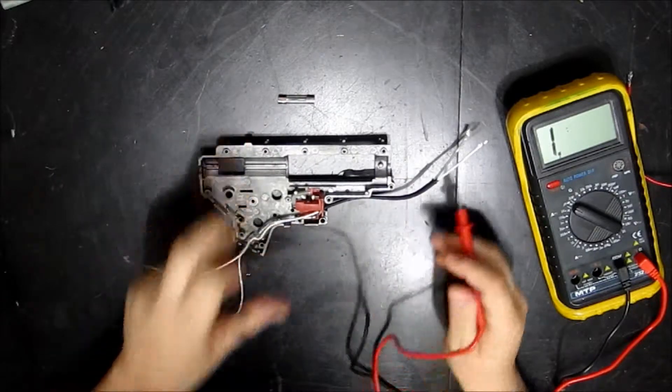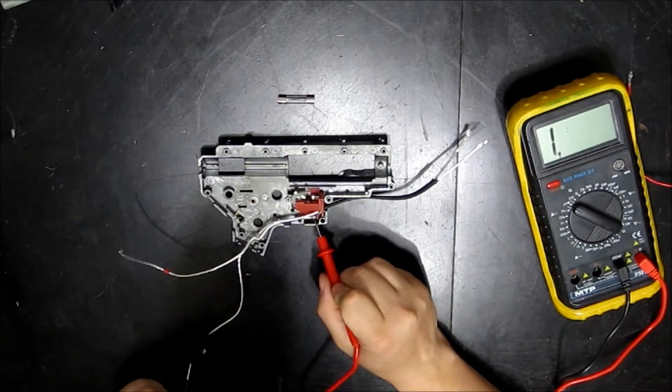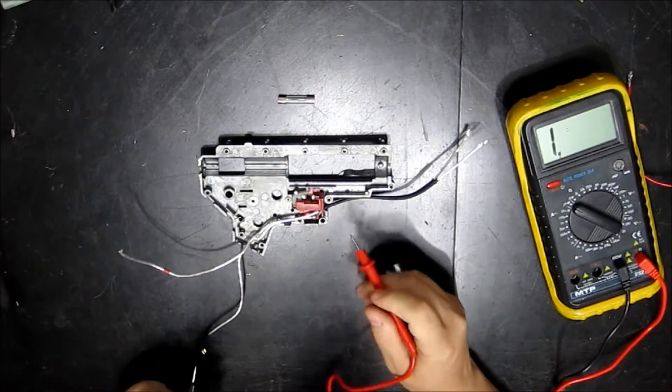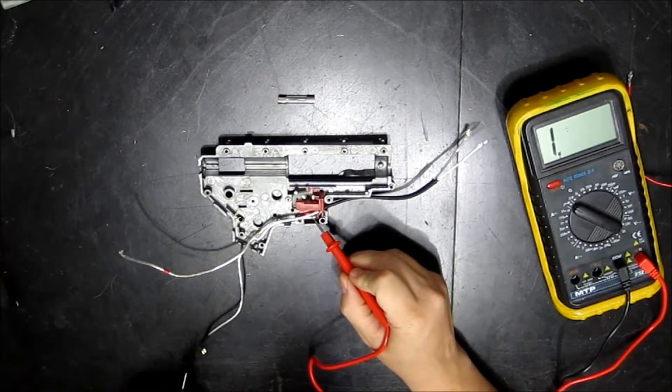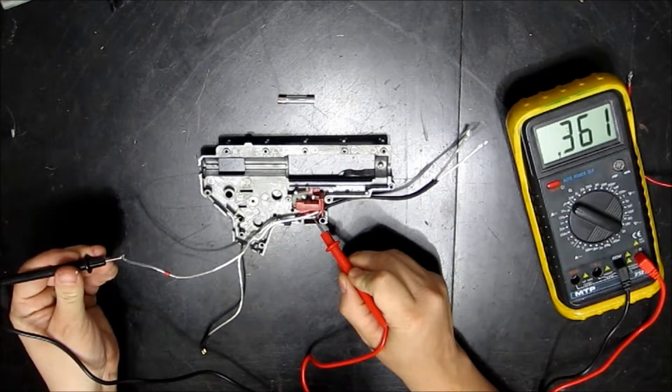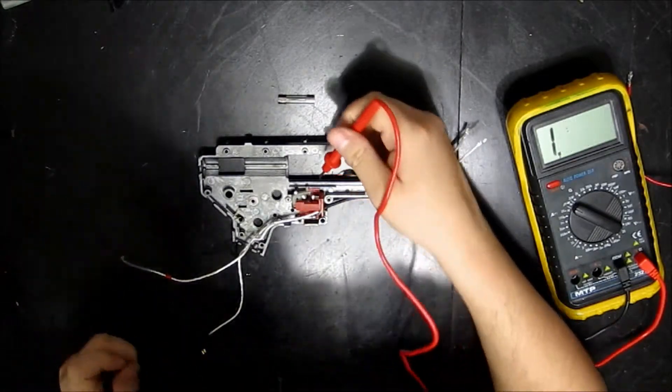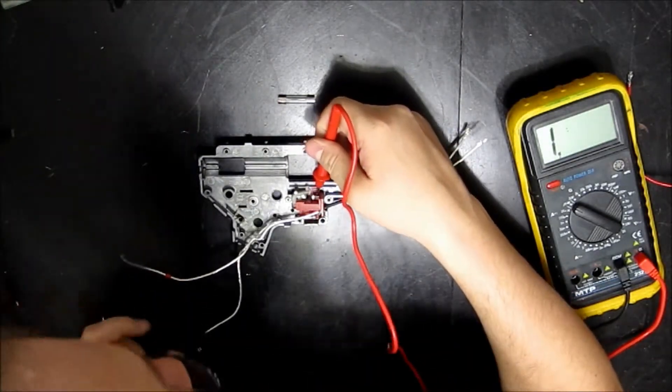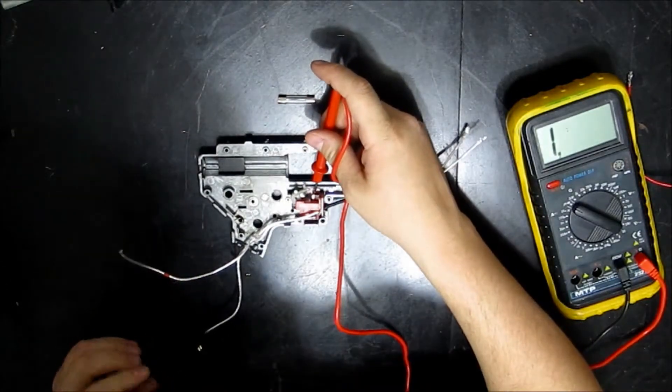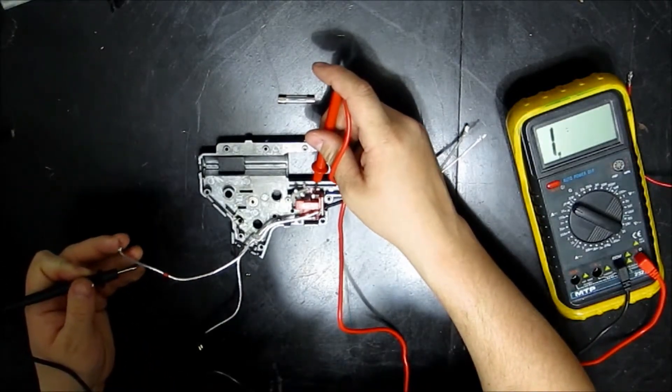Now, this side, you can do the same thing. You want to test it in two places. This is open down here. So you test it here, here and here. And you can also test it on the opposite side. So hold it on the opposite trigger, or sorry, on the opposite contact.